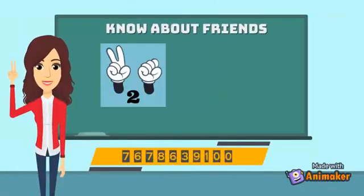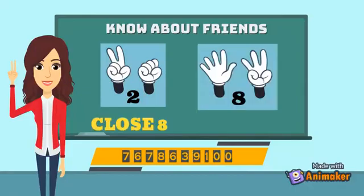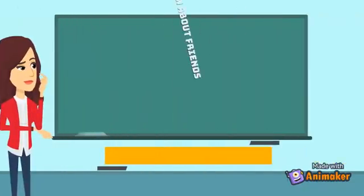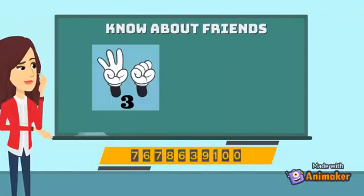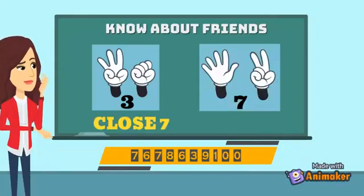Let's make two on your hand. How many are closed? Yes, eight are closed. So eight is a best friend of two and two is a best friend of eight. Now let's make three on your hand — seven are closed. So three is a best friend of seven and seven is a best friend of three.